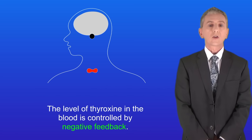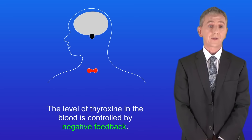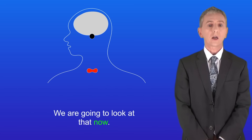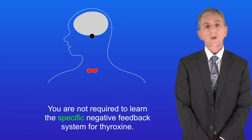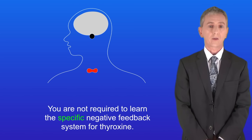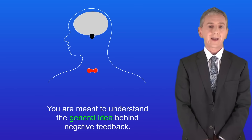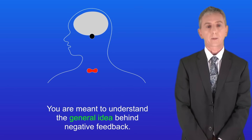Now the level of thyroxine in the blood is controlled by negative feedback, so we're going to look at that now. I should point out that you're not required to learn the specific negative feedback system for thyroxine. However, you are meant to understand the general idea behind negative feedback.